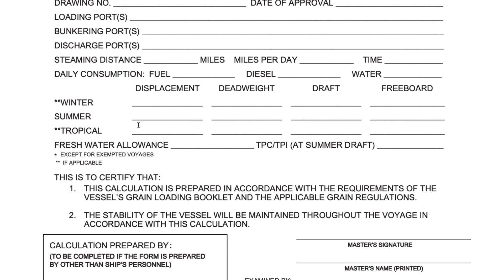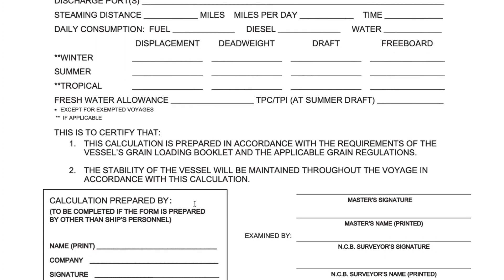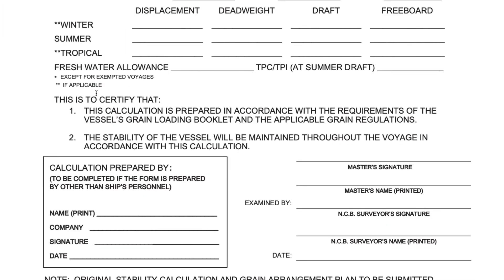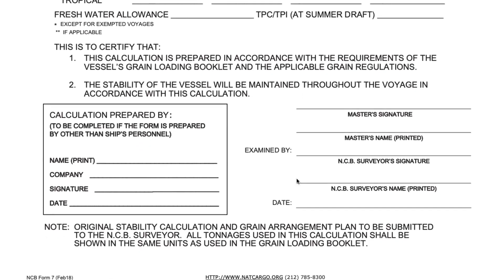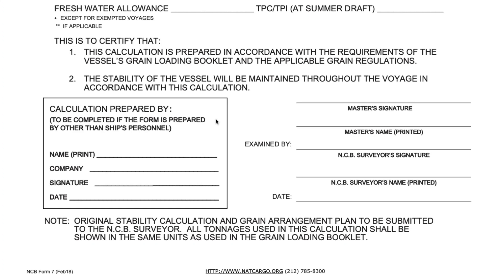Going ahead, we have to mention the freshwater allowance and TPC values. The calculation is normally prepared by the chief officer, so you have to put his name and he has to sign it. On the right-hand side, the report has to be signed by the master as well as the NCB surveyor after ensuring everything is in order. You also have to supplement the original stability calculation and the grain arrangement plan, which is the stowage plan.